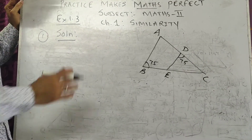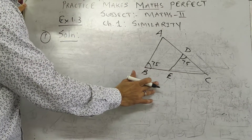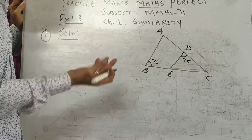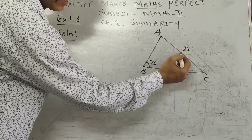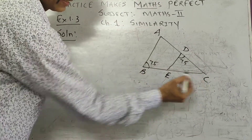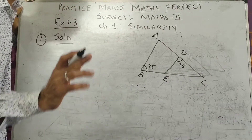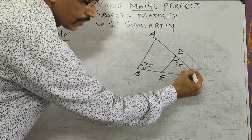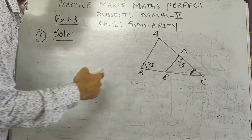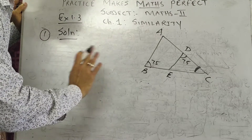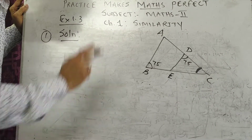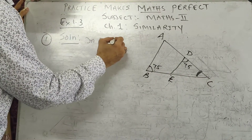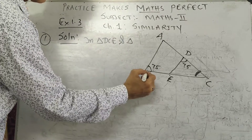Come to sum number 1 of exercise 1.3. From the diagram, angle CDE is 75° and angle ABC is 75° — one angle is congruent. And angle C is common to both triangles. So in triangle DCE and triangle BCE, we have two conditions met: angle CDE congruent to angle CBE (each 75°), and angle C congruent to angle C (common angle).